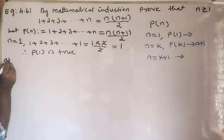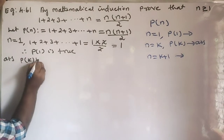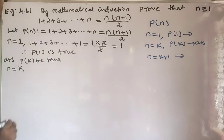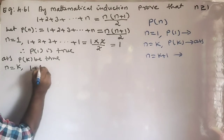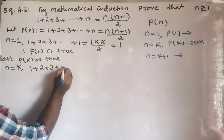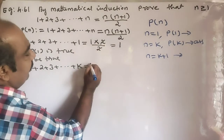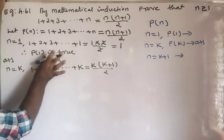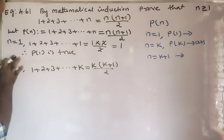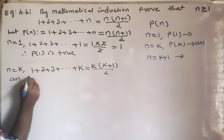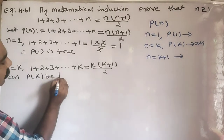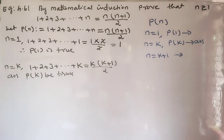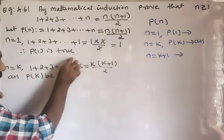Second category: let us assume P(k) is true. So for P(k), n is equal to k, and we assume 1 plus 2 plus 3 plus ... plus k is equal to k(k+1)/2.